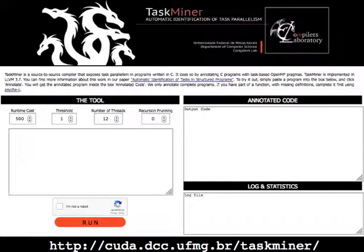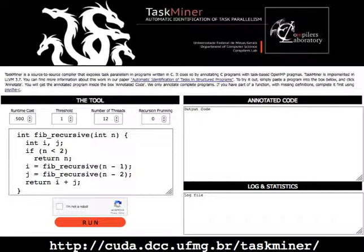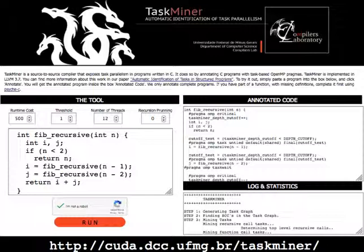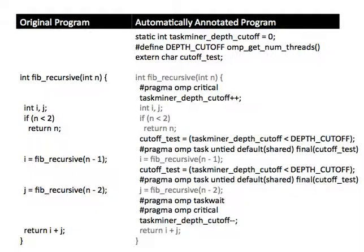As a byproduct of this paper, we have today a tool online which you can use to annotate programs. It has a small window which you can type a program, after you tell Google that you are not a robot. You get the annotated program, which you can compile with GCC6, for instance, to run it in parallel.